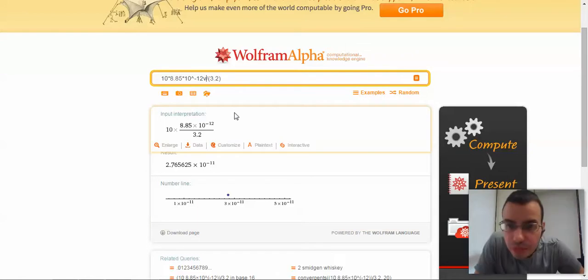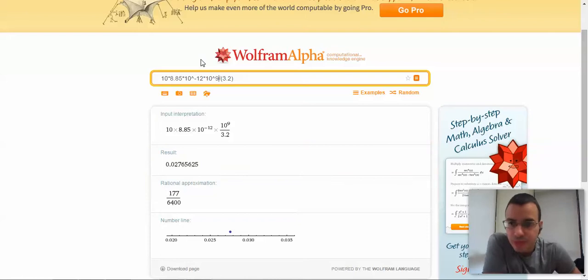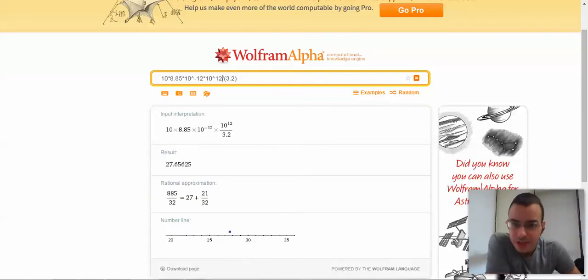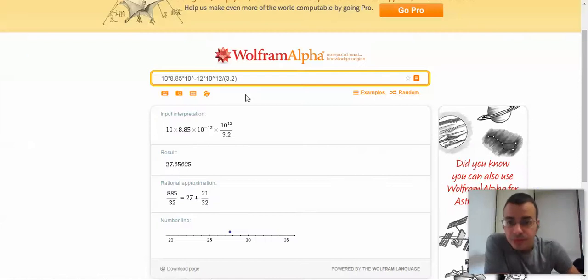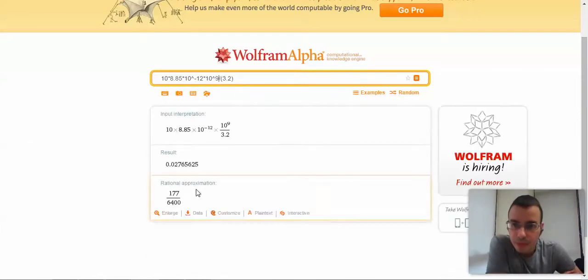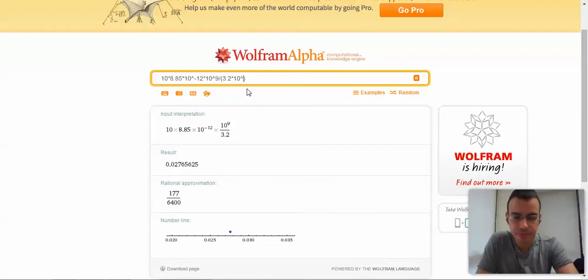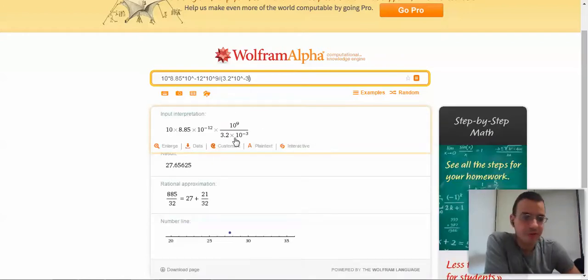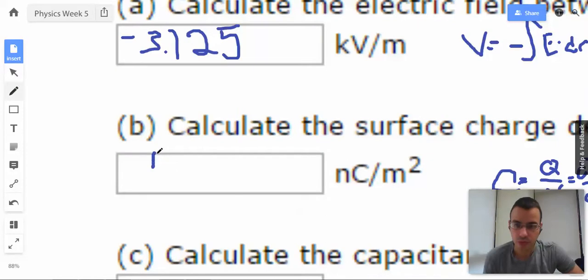I wonder why there's a V in there. I'm multiplying by 10 to the ninth, converting it to pico. 27.6 pico. No, they wanted nano. So we have epsilon naught here, voltage there. I had to convert it back to millimeters. So 27.6. There we go, that seems more reasonable. 27.6 nanocoulombs per meter squared.